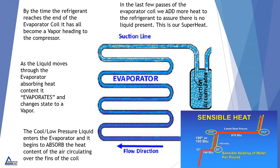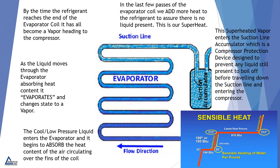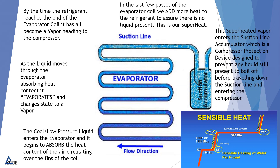In the last few passes of the evaporator coil, we add more heat to the refrigerant to assure there is no liquid present. This is our superheat. This superheated vapor enters the suction line accumulator, which is a compressor protection device designed to prevent any liquid still present from traveling down the suction line and entering the compressor.